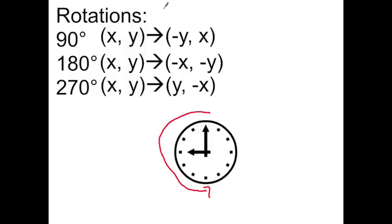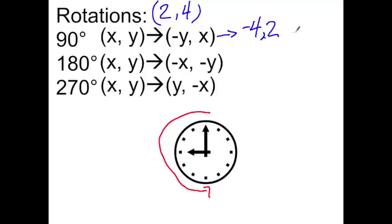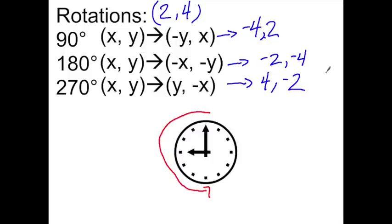Let's say I gave you the values of 2 and 4. For a 90 degree rotation counter-clockwise, we switch the x and y coordinates. This becomes negative 4 — because the opposite of positive 4 is negative 4 — comma 2. For 180 degrees, we simply change the signs of both, so we get negative 2, negative 4. For 270 degrees, we put the 4 up front and change the sign of the 2, giving us 4, negative 2.